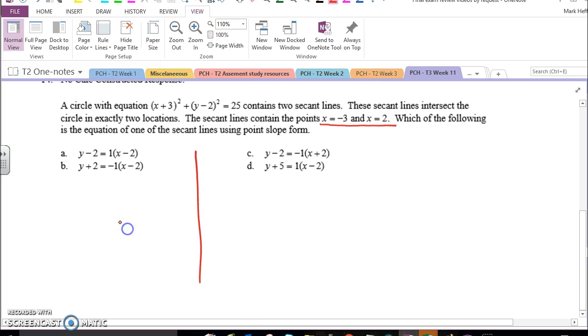So like we've talked about all year, a sketch and a picture tells a thousand words, so we know the center of the circle is negative 3, up 2, and we know the radius is 25, because 5 squared is 25.